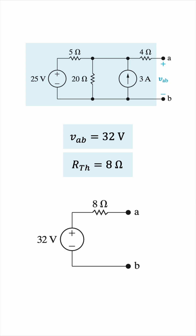Now, you may be wondering: we're going to have to do circuit analysis anyway to find the open circuit voltage and the short circuit current, so why bother with this? The answer is that you only have to do it once, and then you'll have this much simpler circuit to use for power calculations, if you were to just change the load connected between the terminals.